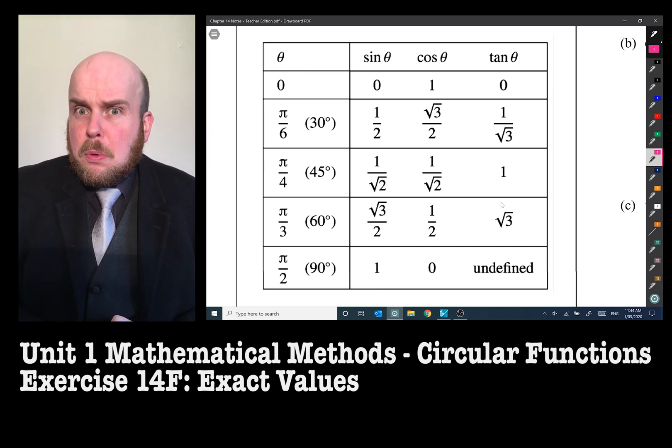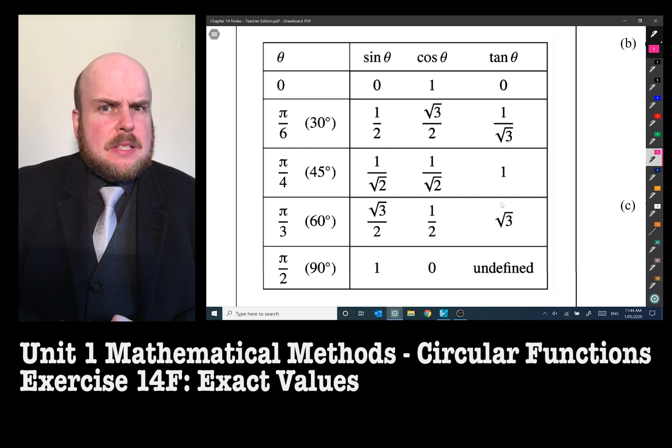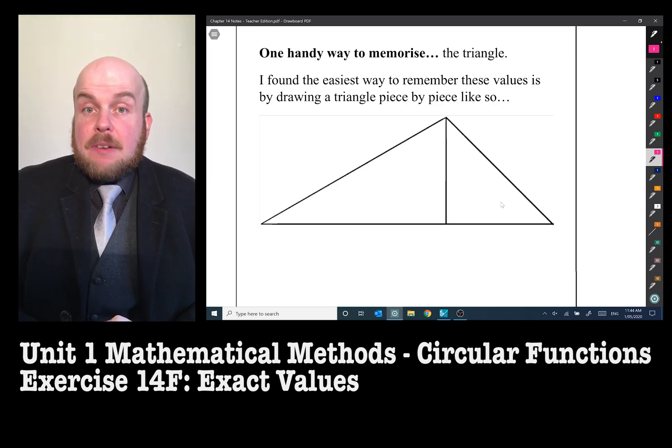In fact, you've already seen some of it in the previous videos. Here is what I call the exact values triangle. It's actually made up of two right angle triangles back to back.